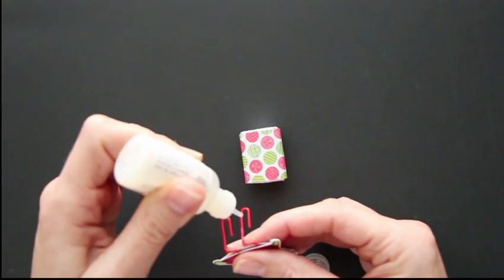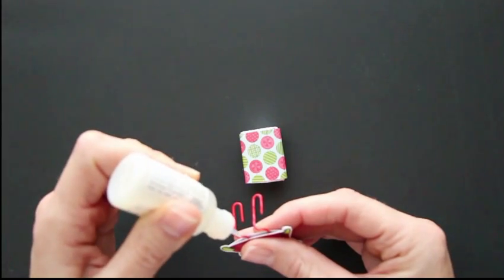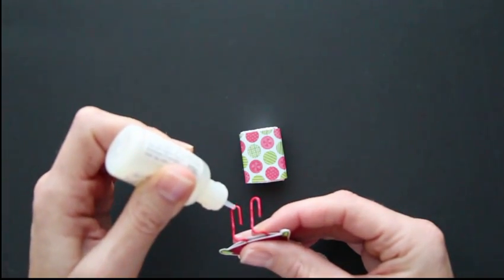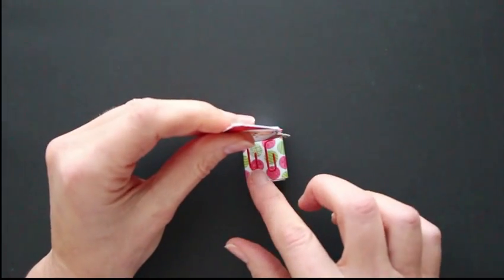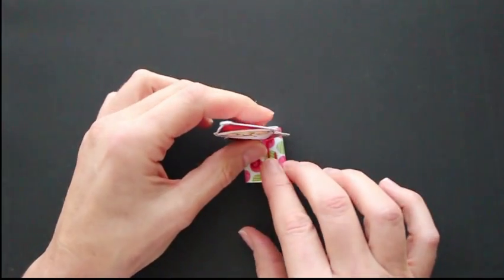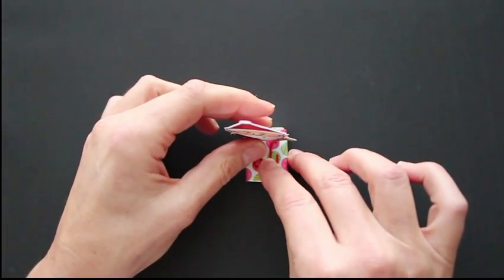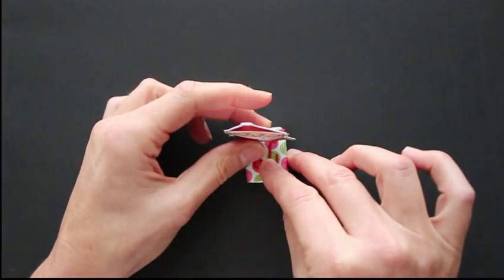So just add a little right here along the paper clip. Set it on the rocker and hold it down for a little bit. And then just let it dry before you rock it.